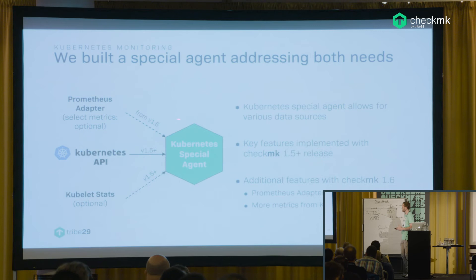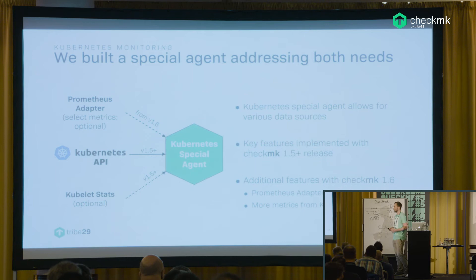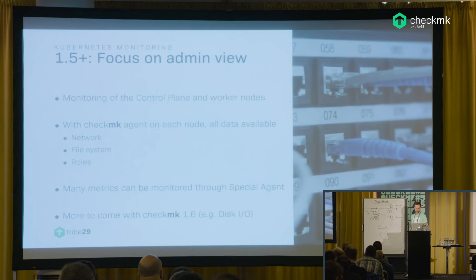For all of this, the Kubernetes Special Agent is used. Different data sources are used, such as the kubelet of different nodes and the Kubernetes API. Most features are implemented in version 1.5+. For 1.6, we're planning new adapters, including the Prometheus adapter and other API data sources.